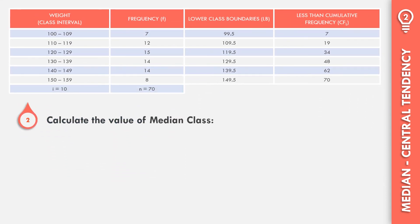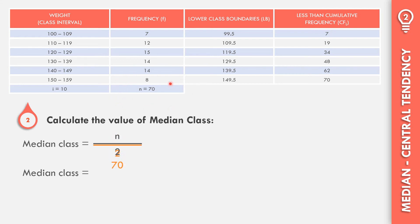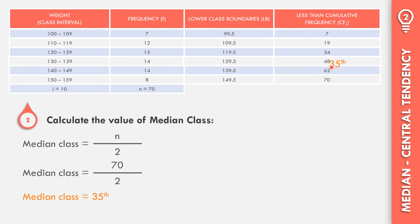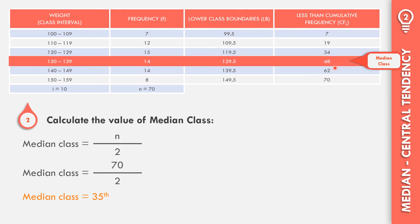Let us calculate now the median class. The formula: median class equals N over 2. With N equal to 70, we get 70 divided by 2, which is 35. Since 35 falls between cumulative frequencies 34 and 48, we choose 48. That is the median class, which corresponds to the interval 130 to 139.